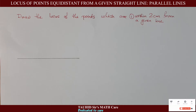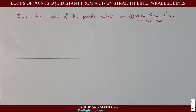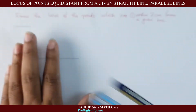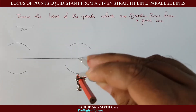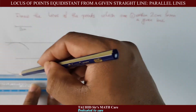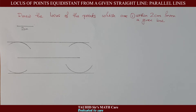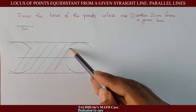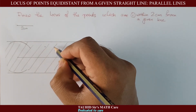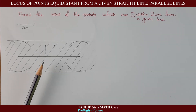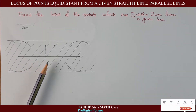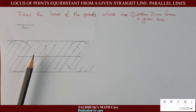Now you are asked to draw the locus of the points which are within 2 centimeters from a given line. The first thing we do is draw the locus of points which are exactly 2 centimeters away from the given line. Then we shade the inside of these two parallel lines. For any point in this shaded region, the distance from the line is always less than 2 centimeters. This shaded region is our desired region.